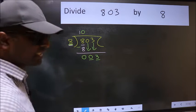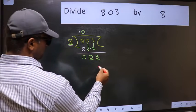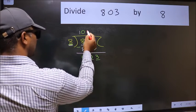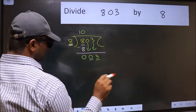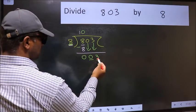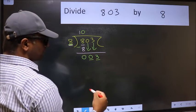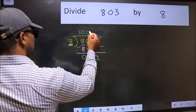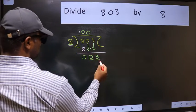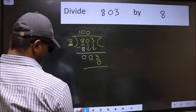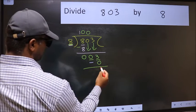Instead of that, what you should think of doing is which number should we take here. If I take 1, we will get 8. But 8 is larger than 3. So what we should do is we should take 0. So 8 into 0, 0. Now we should subtract. We get 3.